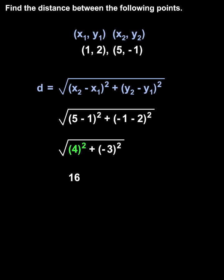Next, 4² is 16, and (-3)² is positive 9. So we have the square root of 16 + 9, or the square root of 25, which is 5.